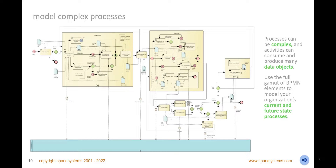Model complex processes of any size with Enterprise Architect, and use data objects to show when information is consumed and produced during a business process. Use any BPMN constructs such as parallel, exclusive, inclusive, and complex gateways or intermediate events to show flow control. Use message flows to indicate interactions with an external organization represented by a pool. Use the Pan and Zoom window to seamlessly explore these large diagrams and focus on the section of interest.